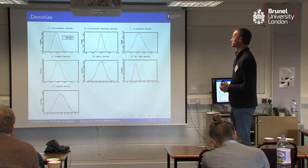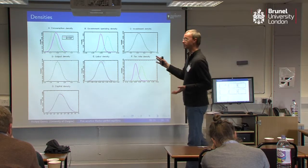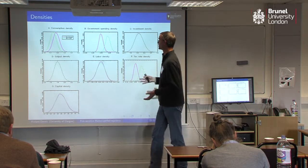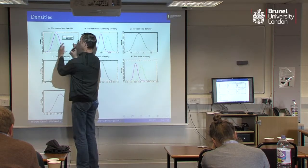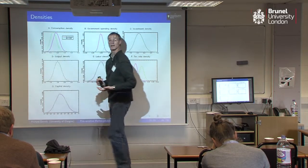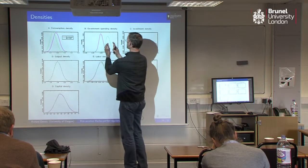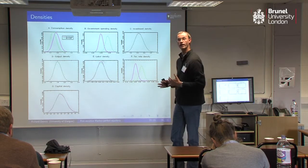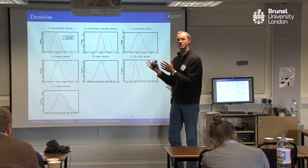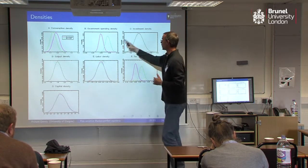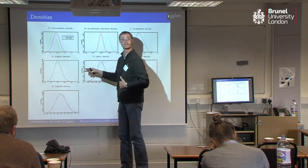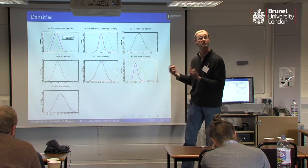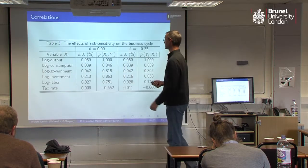This next result shows pretty much the same thing, but in terms of the unconditional densities rather than the decision rules. You can see what risk sensitivity is doing to the whole density: it's moving the consumption density pretty much parallel to the left, government spending pretty much parallel to the right. It's not completely parallel, but a lot of the adjustments do look like that. That sort of suggests that if it's just a change in first moments, then we're not likely to see much in terms of differences in variances and correlations — in terms of business cycle properties — which is indeed what we see.